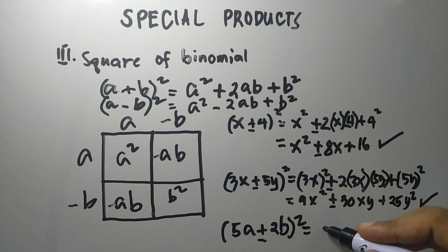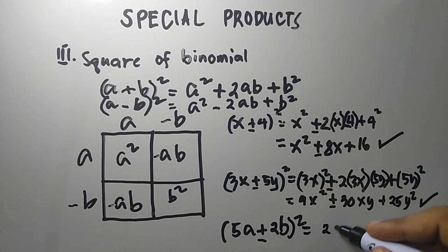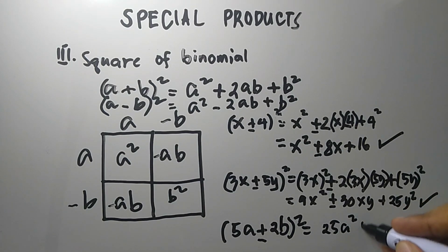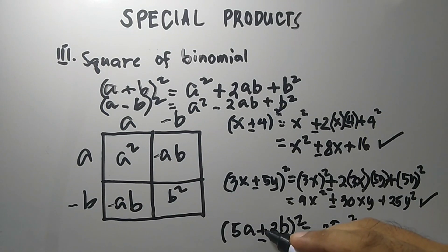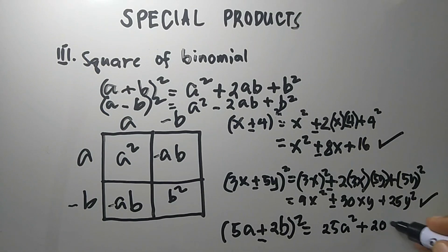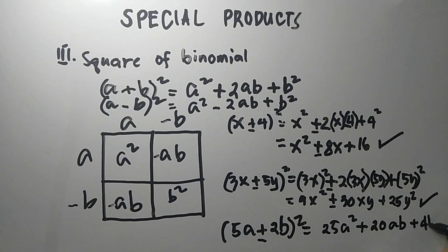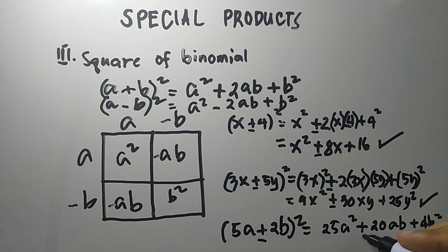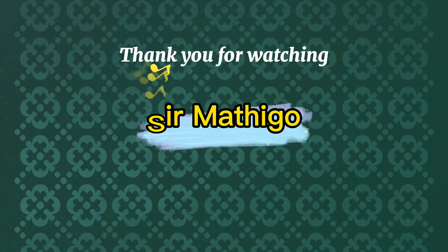So let's find the answer. For (5a plus 2b) squared: this is 25a squared plus 20ab plus 4b squared. If we use the negative — (5a minus 2b) squared — the middle term becomes negative: 25a squared minus 20ab plus 4b squared. That's all, thank you, and I hope you learned today.